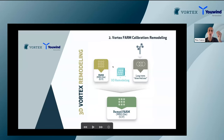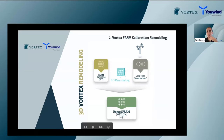On one side we have our model results — high-resolution WRF downscaled products from ERA5 — the wind field generated by the model without any measurements. On the other side we have met mast long-term wind series from the customer. We combine and correct these in what we call the remodeled FARM, the calibrated FARM. We then generate WRG files, but it's important to note that we don't correct WRG files directly — we correct the wind speed fields first, and then generate the corrected WRG files.